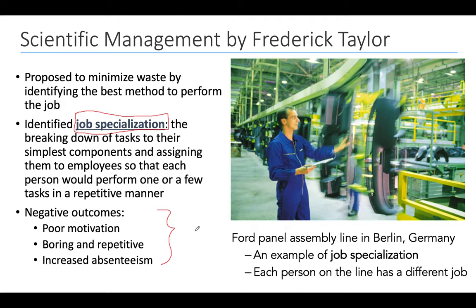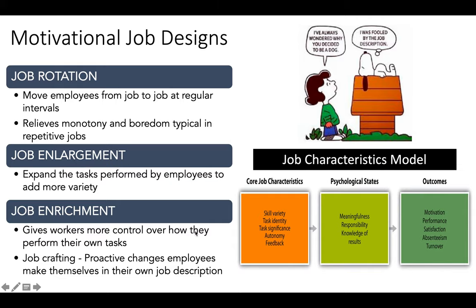The outcomes associated with job specialization are poor motivation — it's boring, repetitive, and people tend to be absent from their jobs. Instead, we can do things that are more motivational for employees. We have job rotation, job enlargement, and job enrichment. On the right side you see the job characteristics model, which we'll talk about on the next slide — it's basically a theory that tells us why it's more motivational to do more things rather than fewer things in a job.